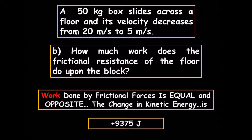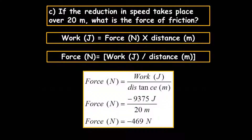In that same problem, how much work does the frictional resistance of the floor do upon the block? The frictional force is the net force, and that net force is applied over a certain distance, because work is force times distance. We know that the work done on the block is equal to the work that the block does on the floor — equal and opposite. So the work done by the frictional forces equals the negative of the change in kinetic energy, therefore it would be positive 9,375 joules. The floor is absorbing that energy, which is endothermic.